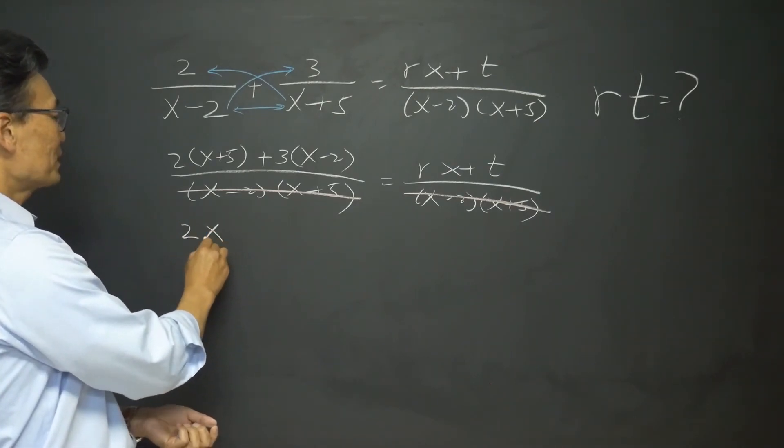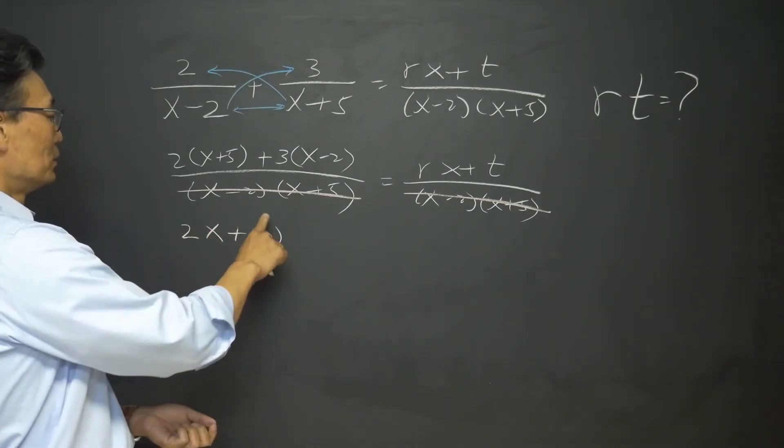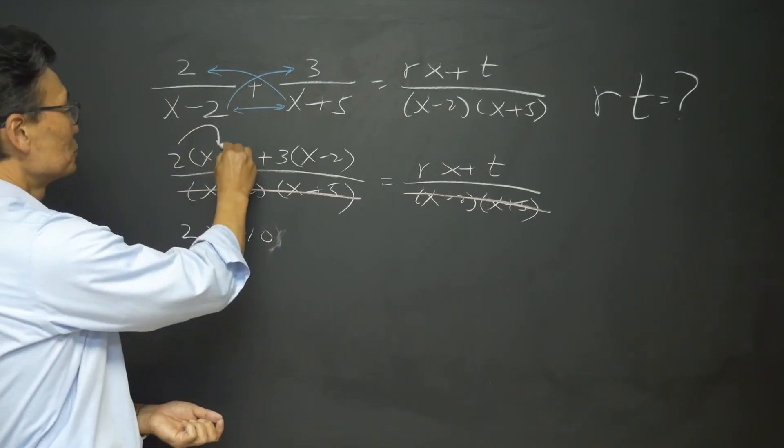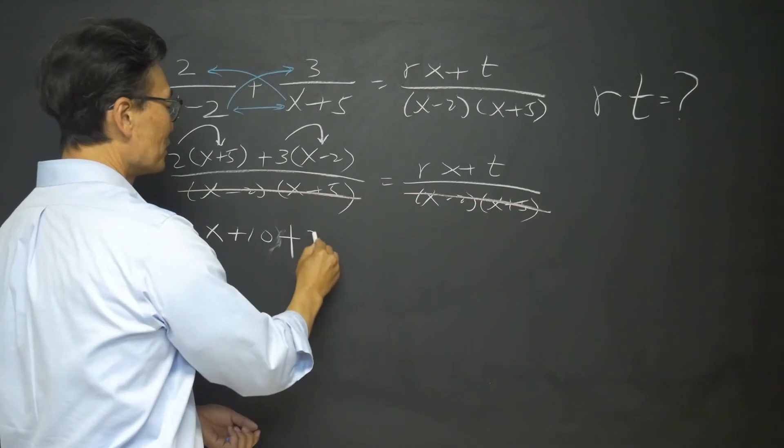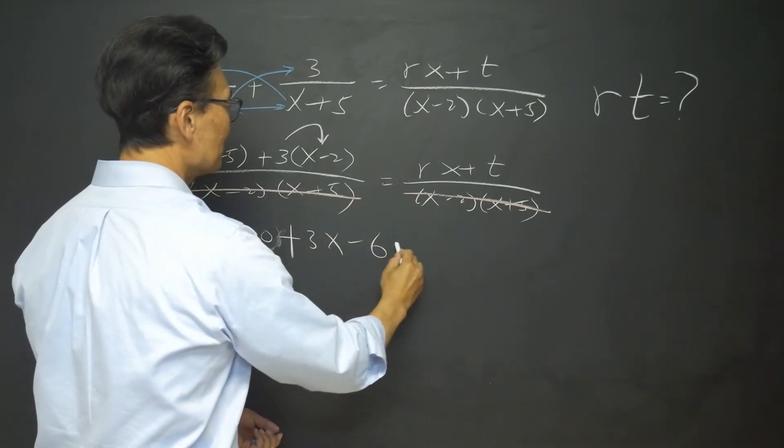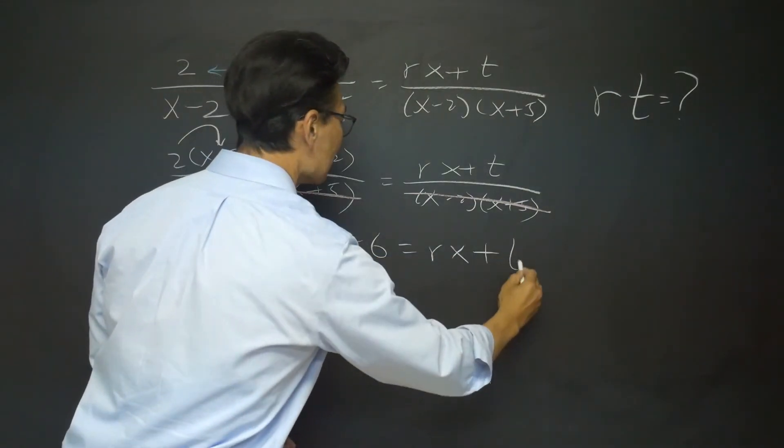so we get 2x plus 10. Notice I took the 2, distributed in here, plus take the 3, distributed in here, gives us 3x minus 6 equals rx plus t.